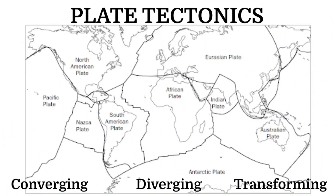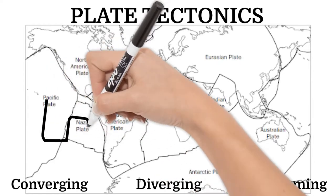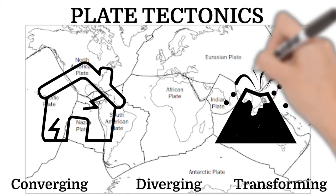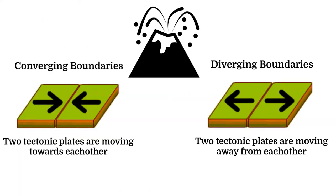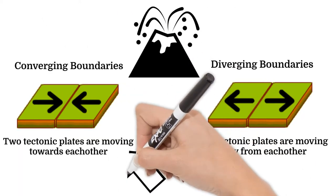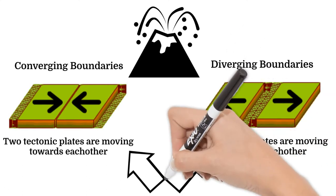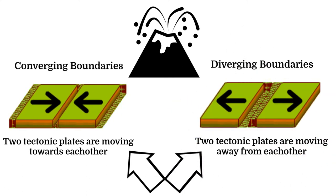The movement of tectonic plates not only can cause earthquakes, it can also cause volcanoes. Converging boundaries where tectonic plates are moving towards each other are often where volcanoes are located, but they can also happen at diverging boundaries.